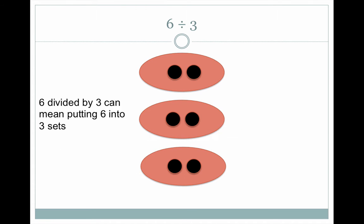Six divided by three can also mean putting six into three sets. Six divided into three groups or sets makes two objects in each set.